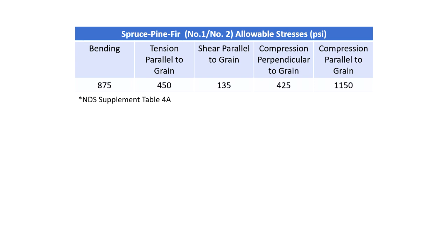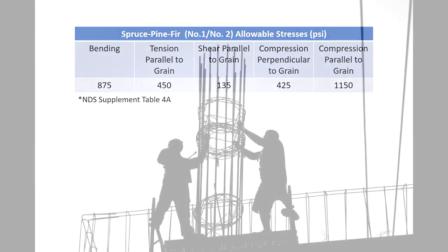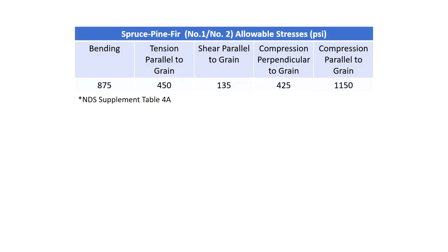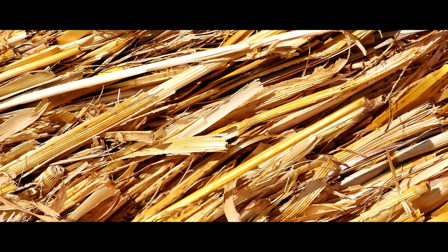What about compression perpendicular to grain? A value is provided, but consider this — though compression strength perpendicular to grain is much lower than parallel to grain, the individual straws can still bear against each other when a force is applied perpendicular to grain. If I push a bundle of straws together, they can bear against each other and resist a substantial amount of force. They're nowhere near as strong as compression parallel to grain, but in bearing, they can resist a good amount of force.